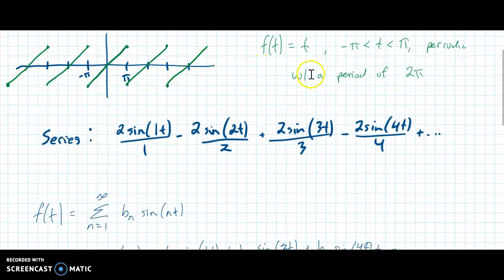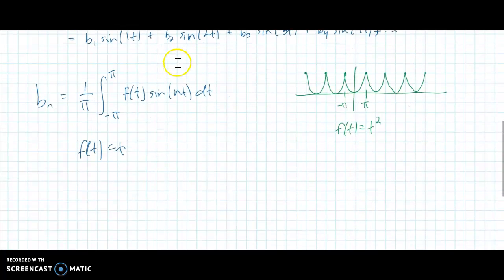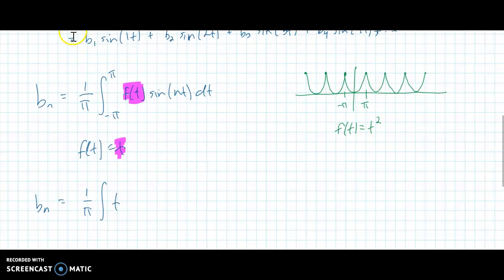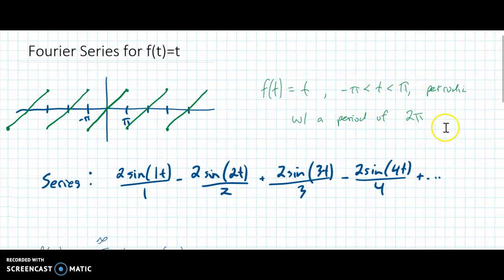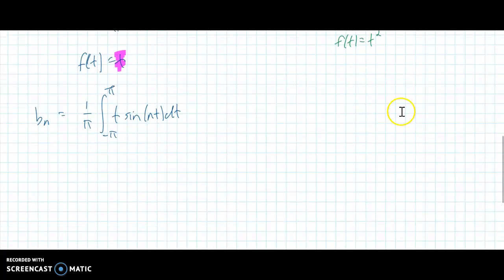So I'm now going to calculate this integral with f of t equal to t. So my b sub n is going to be 1 over pi, integral negative pi to pi, of t times sine of nt, dt. Those bounds can change if I have a different interval, and it's going to change everything, but for now we're just doing an interval from negative pi to pi.